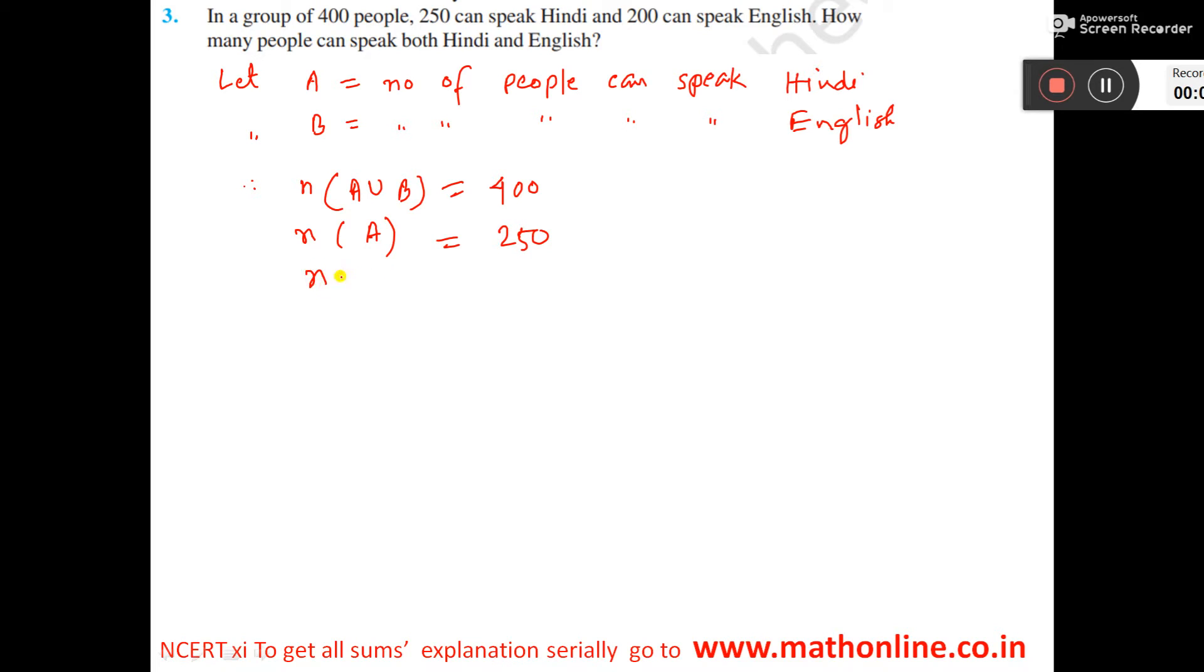And N(B), those who can speak English, is 200. Now we have to find how many people can speak both Hindi and English. That means we have to find A∩B.